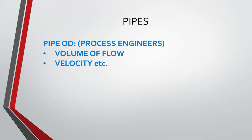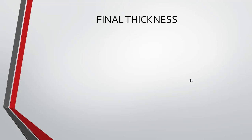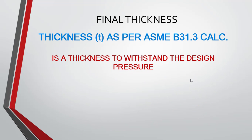The piping OD, which is the outside diameter of the pipes, is basically calculated by process engineers based on certain factors such as volume of flow and velocity, among other parameters. However, pipe thickness has to be calculated by piping design engineers based on the thickness calculation available in ASME B31.3. ASME B31.3 clearly provides the pipe thickness formula. But is this the final thickness? No — the thickness calculated from ASME B31.3 is the minimum thickness required to withstand the design pressure.